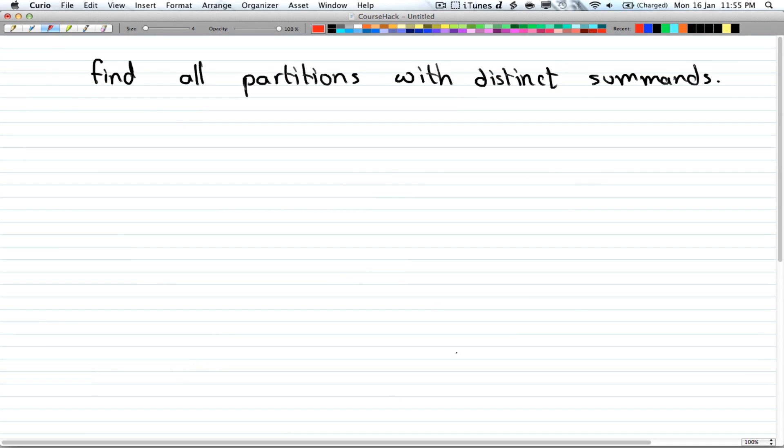Alright, so find all the partitions with distinct summands. So we don't want to repeat anything. If you have a 1, you cannot have another 1. So all we're going to do is 1 plus x, and then 1 plus x squared. Because remember, you can either have it 0 times or 1 times. And the power just tells you what number it is. So this counts the number of 1s.